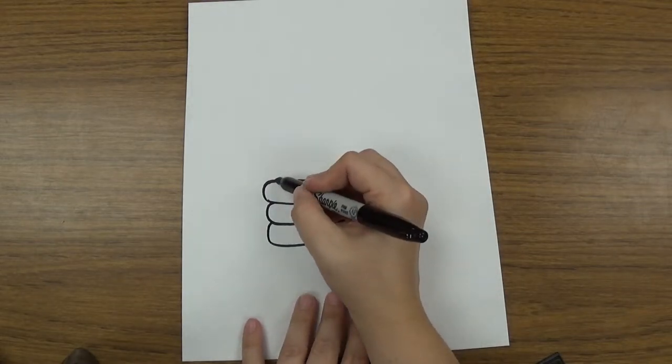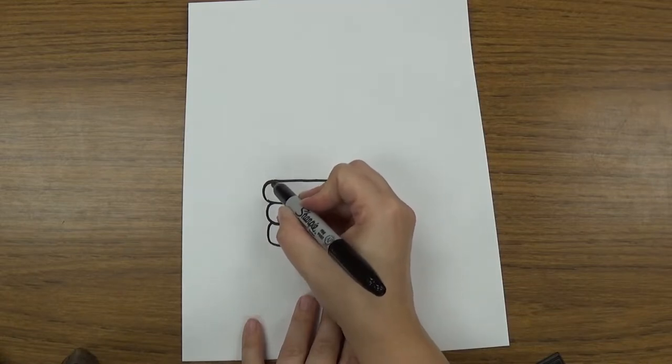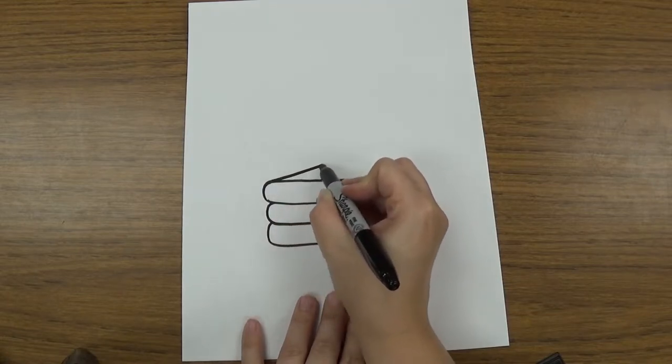The next thing you're gonna do is draw a line that goes from the top one over on the side here and it's going to angle up.